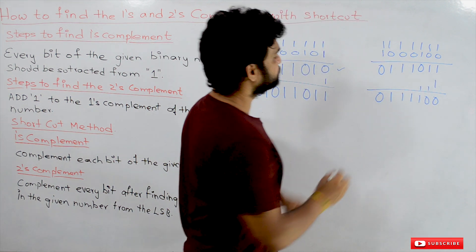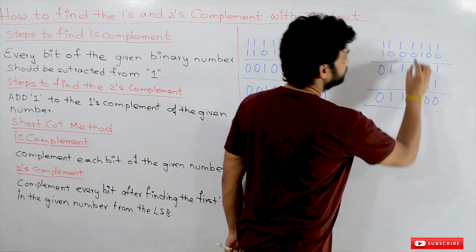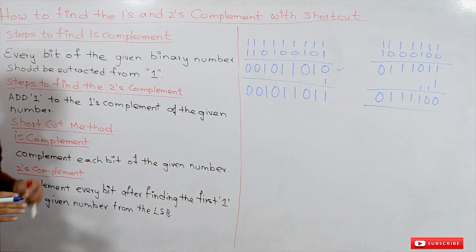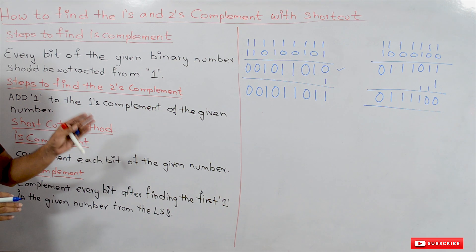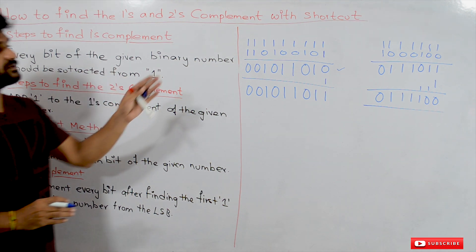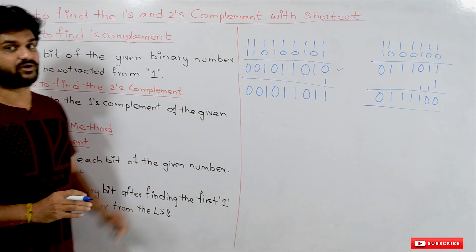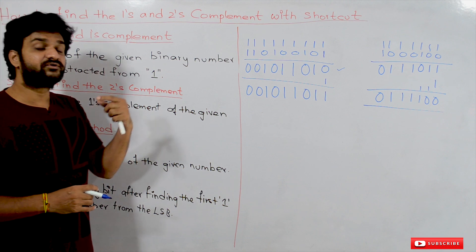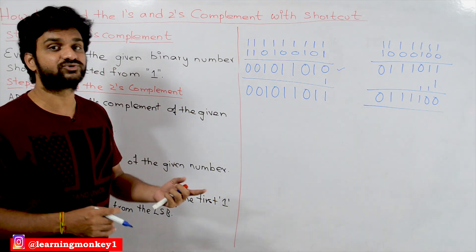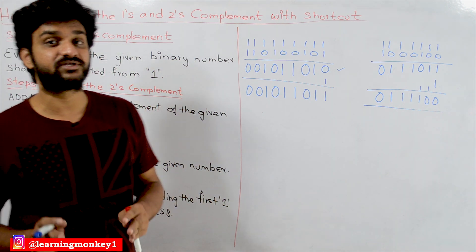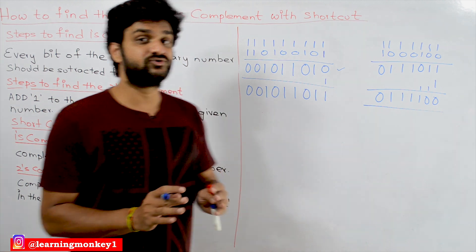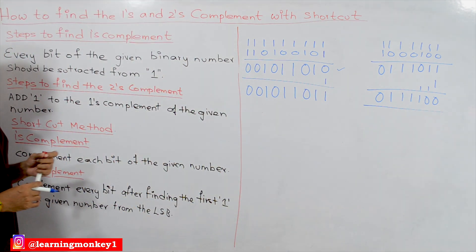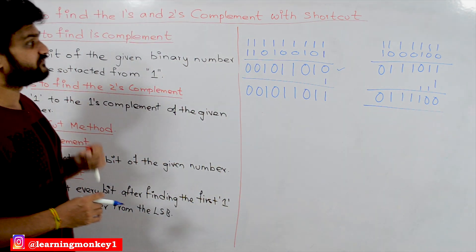These are the methods by which we can find the ones complement and twos complement. Now we will try to find them using the shortcut method, which allows us to find the ones complement and twos complement very easily.